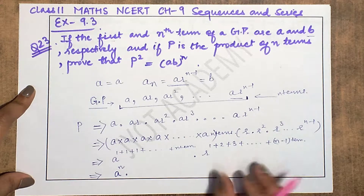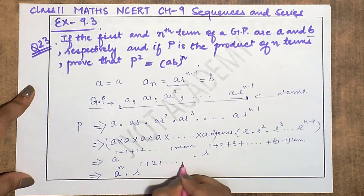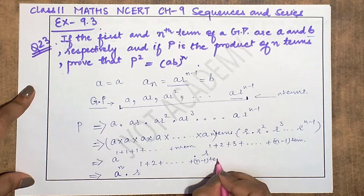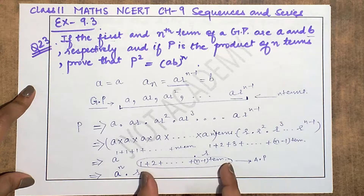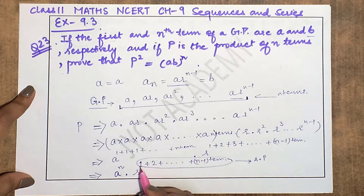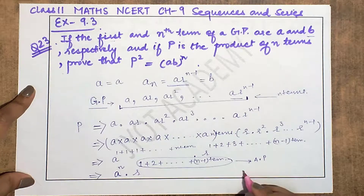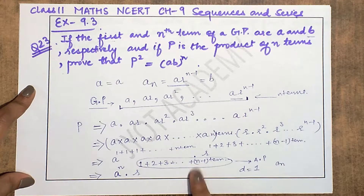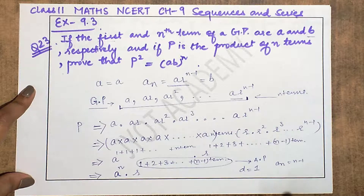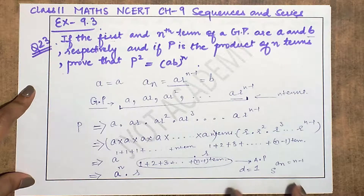The exponent of r is 1+2+...+(n-1). If you look closely, this is an arithmetic progression. So we solve this as an AP on the side. The first term is 1, the common difference d = 1 (since 2−1=1), and the next terms are 3, 4, 5... up to (n-1). We need the sum of this AP.